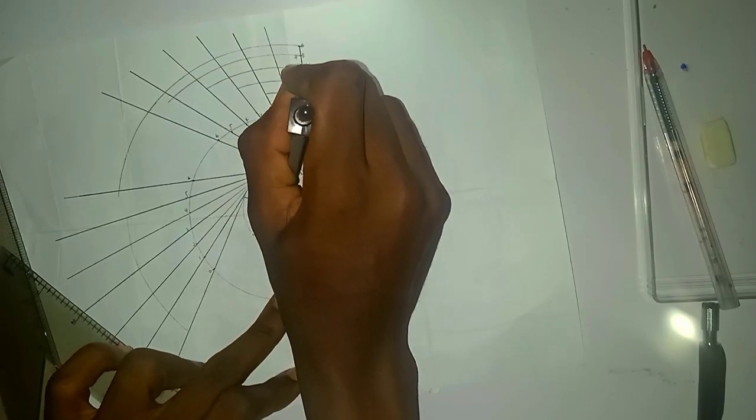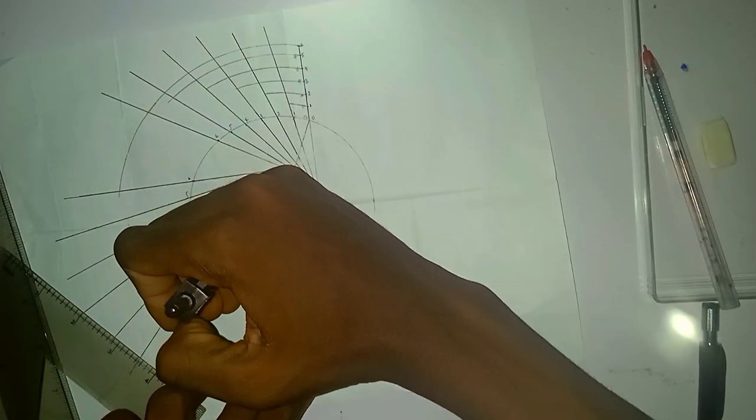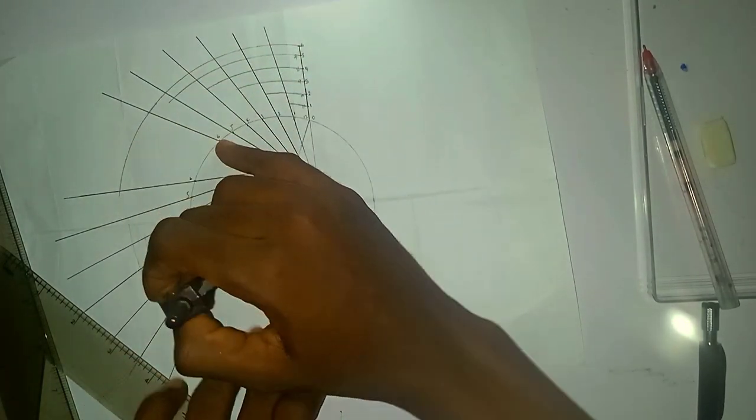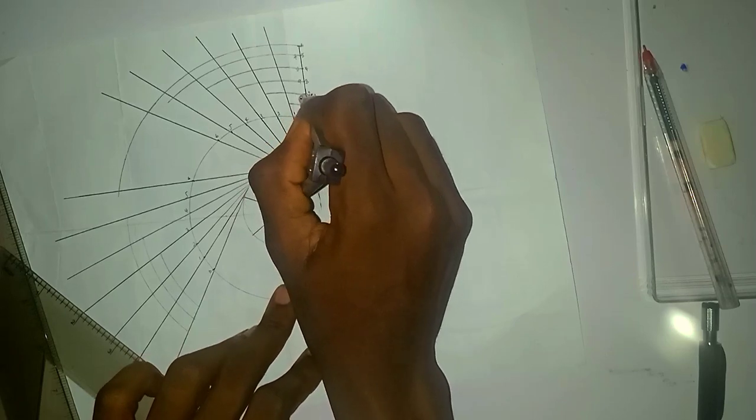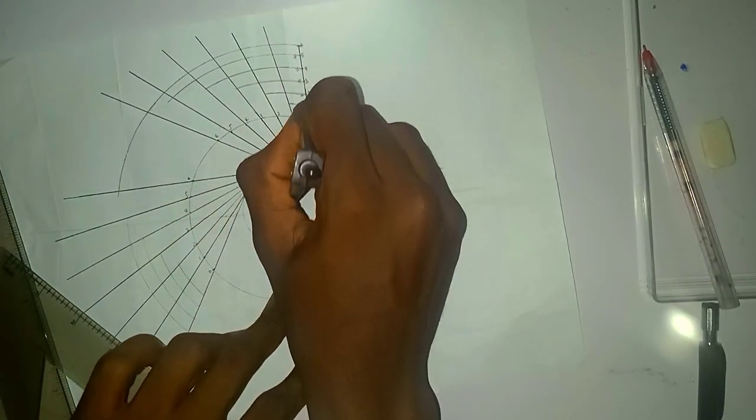Exactly, because here is kind of more confusing. This is exactly where you stop. Then point 4 to 4 here. Point 3, same thing, to point 3. Then point 2 to point 2 here, and then point 1.